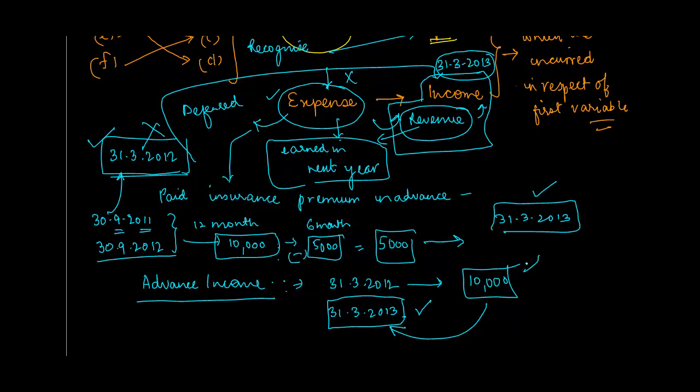But you receive the money in advance. The matching principle says because you are going to earn the income in 31-3-2013 and you are going to incur the expenses pertaining to this income in 31-3-2013, in 2012 you don't show this as an income - you show this as a liability. How the entries and everything work is what we are going to see in subsequent videos.